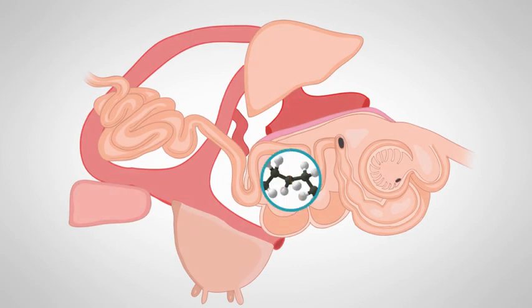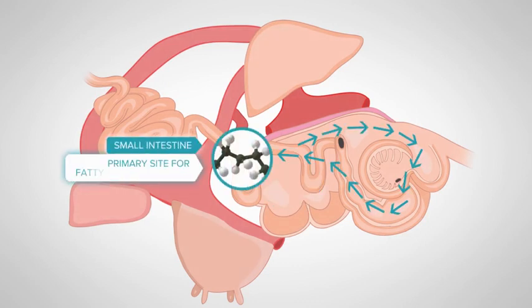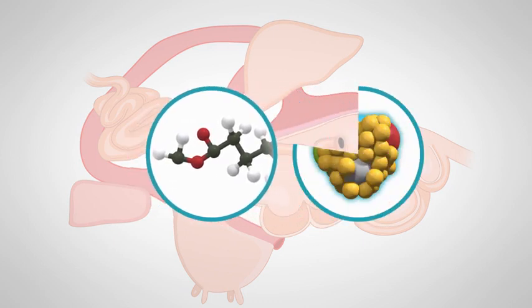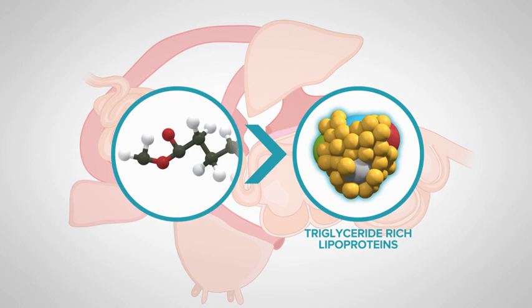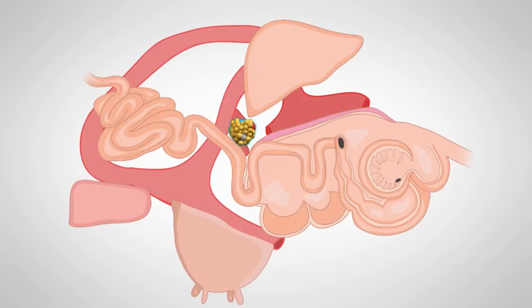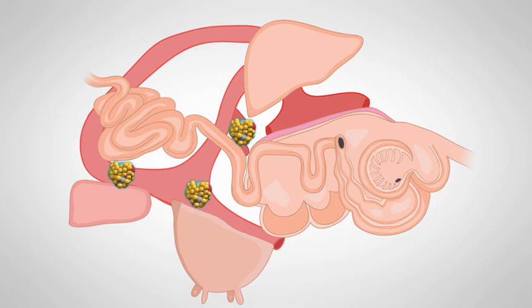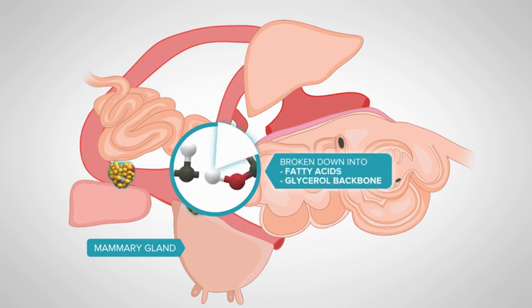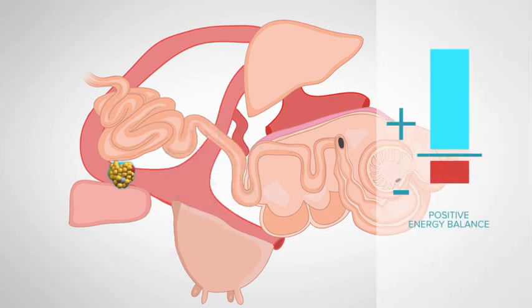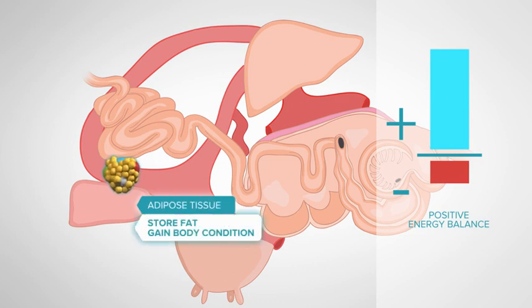So let's look at what happens to the fatty acids once they leave the rumen. From the rumen the fatty acids pass through into the small intestine, which is the primary site for fatty acid absorption. In the intestinal cells they are reconnected to a glycerol backbone and packaged into little parcels known as triglyceride-rich lipoproteins. These lipoproteins enter into the lymph vessels and then into the general circulation. Once in the general circulation they are directed to different parts of the body depending on the status of the dairy cow. In a lactating cow, lipoproteins are directed to the mammary gland where they are broken down once again into fatty acids and glycerol and used to produce milk fat. If a cow is in a positive energy balance, lipoproteins are also partitioned towards adipose tissue and used to store fat or gain body condition.